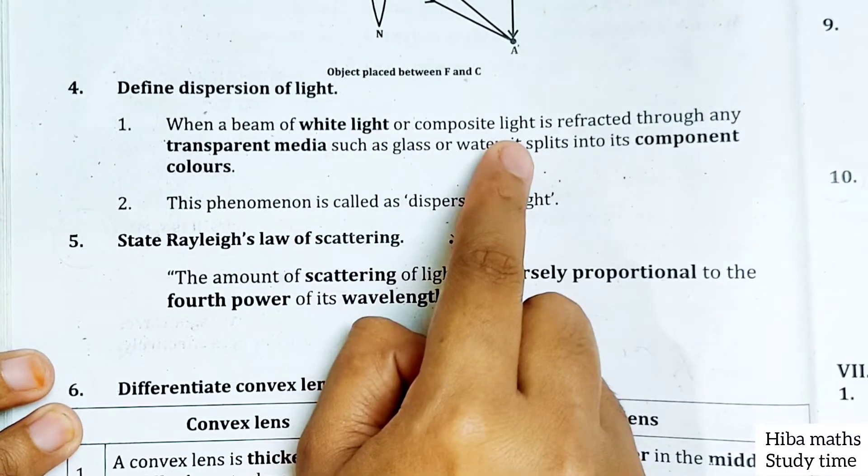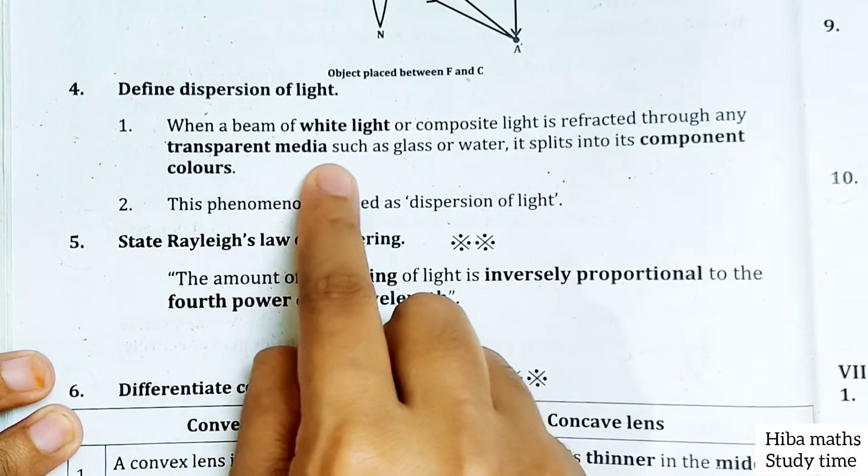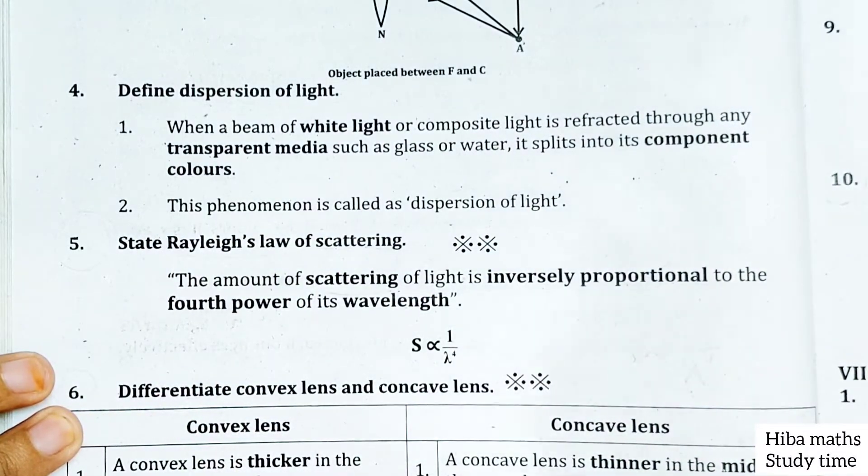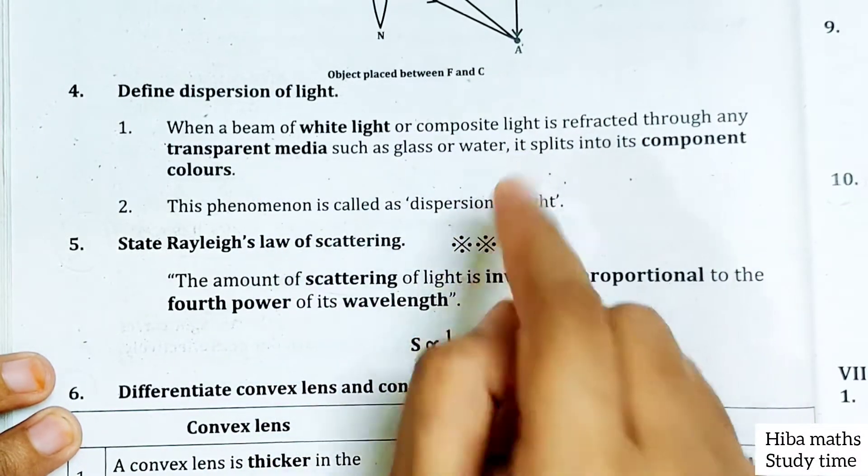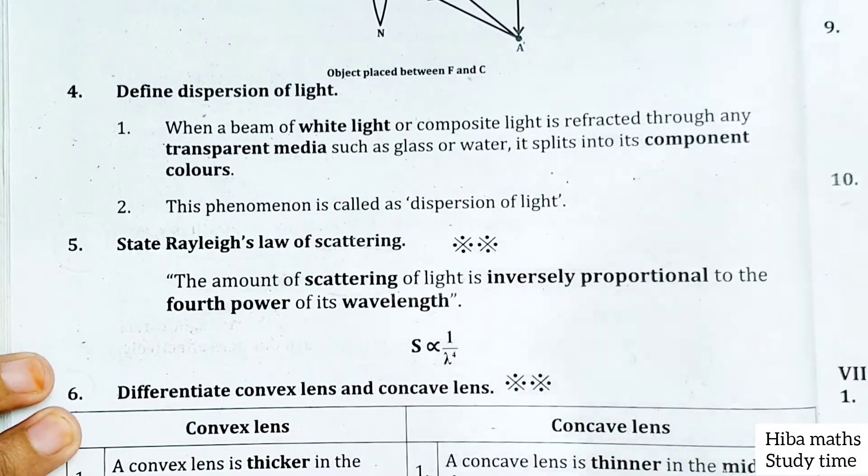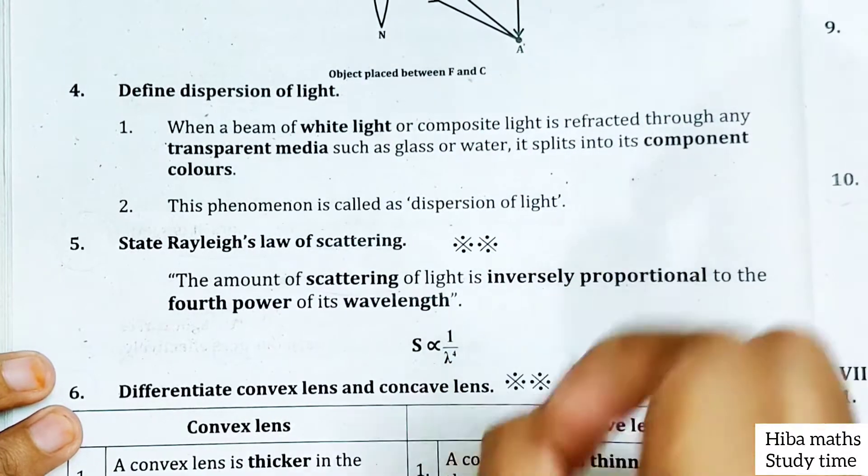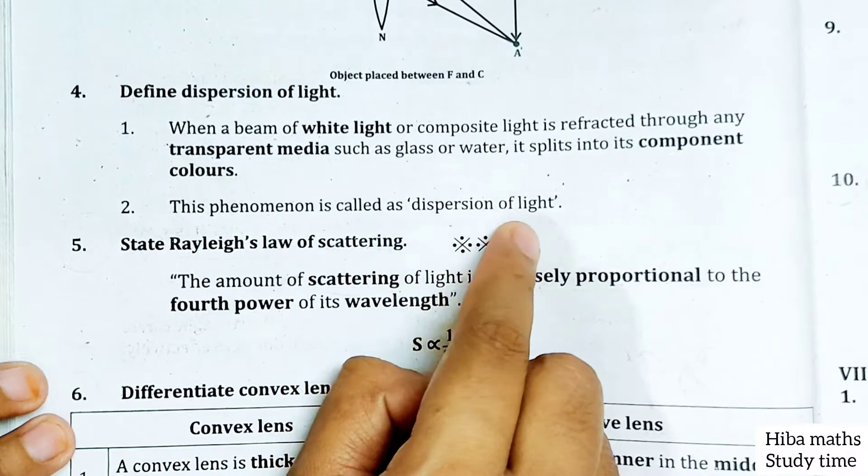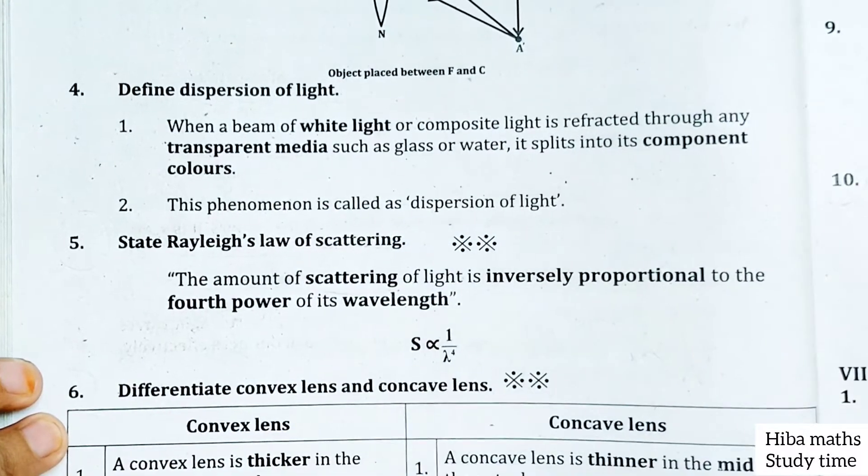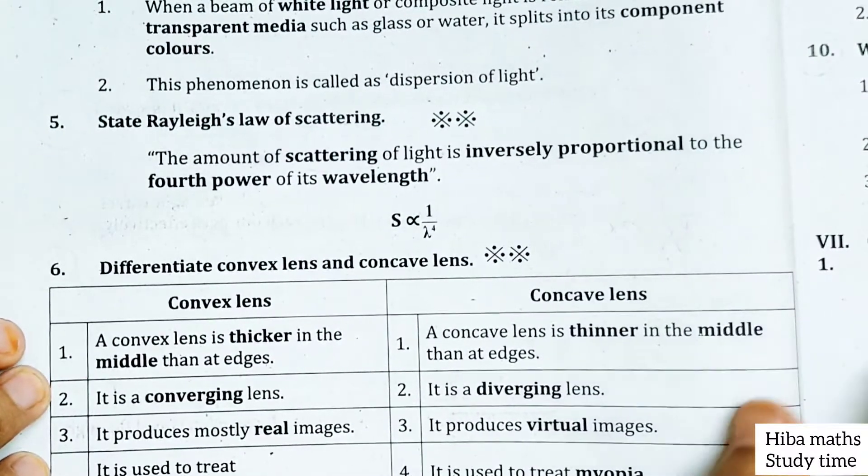This phenomenon is called dispersion of light. When white light or composite light passes through transparent media like glass, it splits into component colors. Different colors are split. This phenomenon is called dispersion of light.